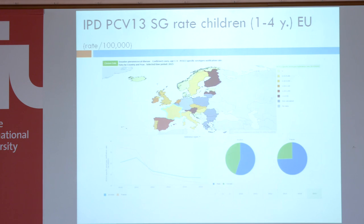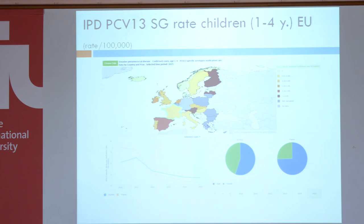So it's rather complex. This demonstrates the conjugate serotypes in the 13-valent vaccine and the evolution, and there you can say we have an effect on incidence of invasive pneumococcal disease caused by vaccine serotypes.